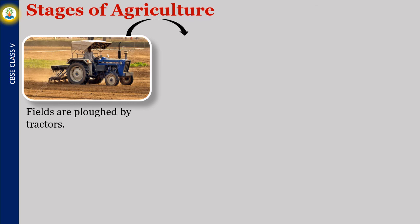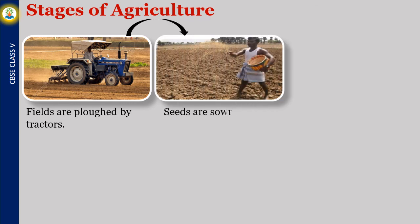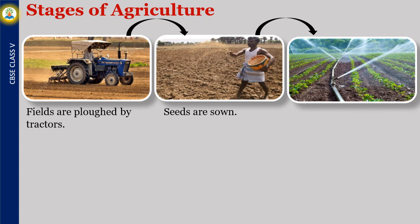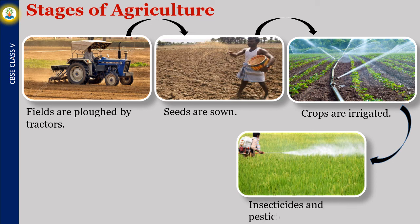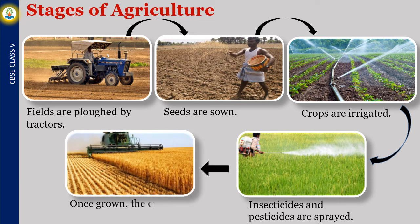Stages of Agriculture. Various stages of agriculture are shown in the following pictures. The following table gives an account of the two types of crops.